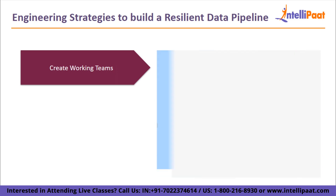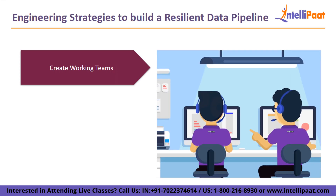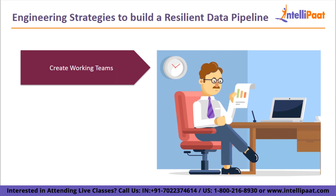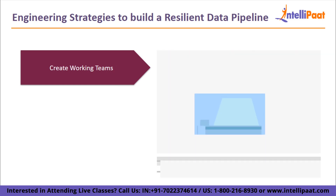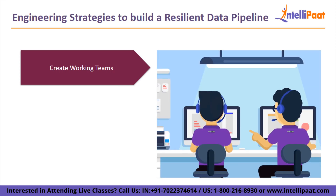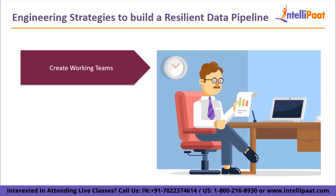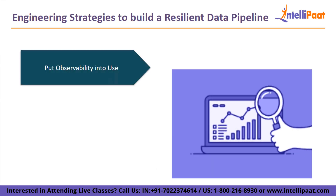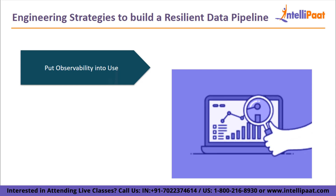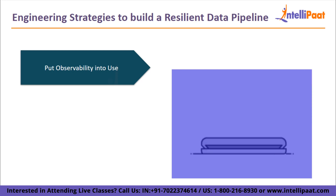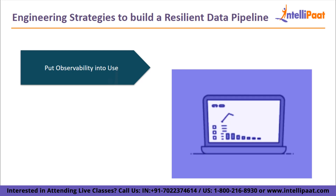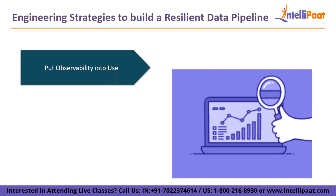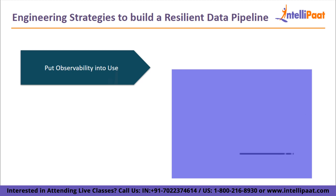Since group problem solving is more efficient than individual issue solving, they should work together to solve difficulties. At a lesser cost, functional groupings build efficient data pipelines. Next, we have putting observability tools into use. You're able to see within your data pipeline using observability technology. Therefore, if the pipeline is down, you can easily identify the issue and solve it.